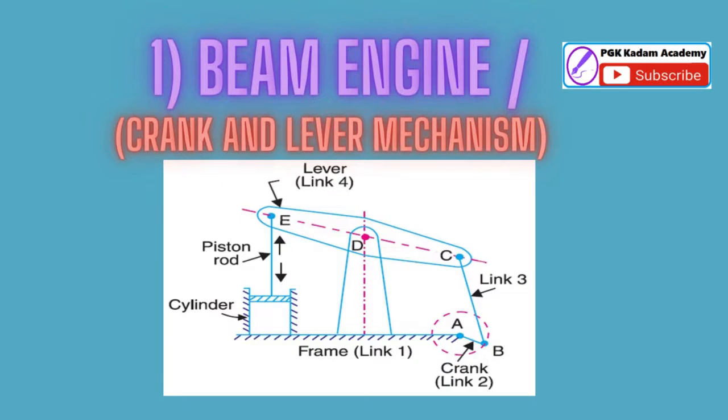Beam engine, crank and lever mechanism. The purpose of this mechanism is to convert rotary motion into reciprocating motion. A part of the mechanism of a beam engine, also known as crank and lever mechanism, which consists of four links, is shown in figure.